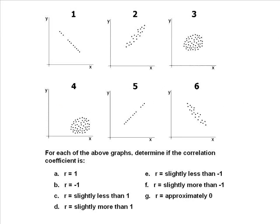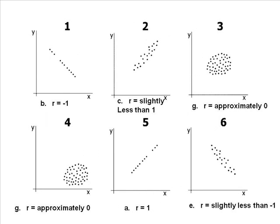Here are some examples of graphs showing various validity coefficients plotted on x-y coordinates. Try to match each of the graphs with the appropriate description from the bottom. Here are the correct answers. Did you get them right?